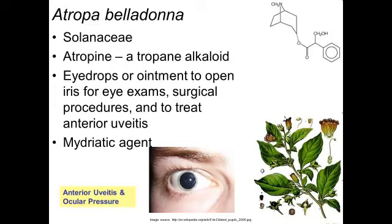Thus far we've spoken about two plants used for their meiotic or pupil-constricting activity. Now we're going to discuss a plant used for its pupil-dilatory activity, or a mydriatic agent. Here you can see a picture of a dilated pupil. As you know, Atropa belladona was an important cosmetic plant centuries ago — the juice of the berries were once squeezed into the eyes of women to dilate their pupils to simulate a state of heightened arousal. The main active constituent is atropine, which is a tropane alkaloid. It is still occasionally used as eye drops at about 0.5% or ointment at a 1% preparation to open the iris for examination or surgical procedures, and also in the treatment of anterior uveitis.